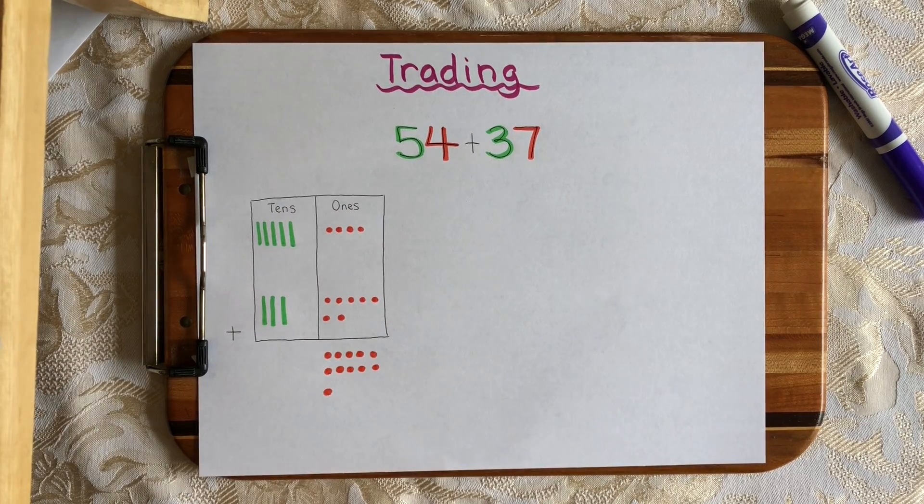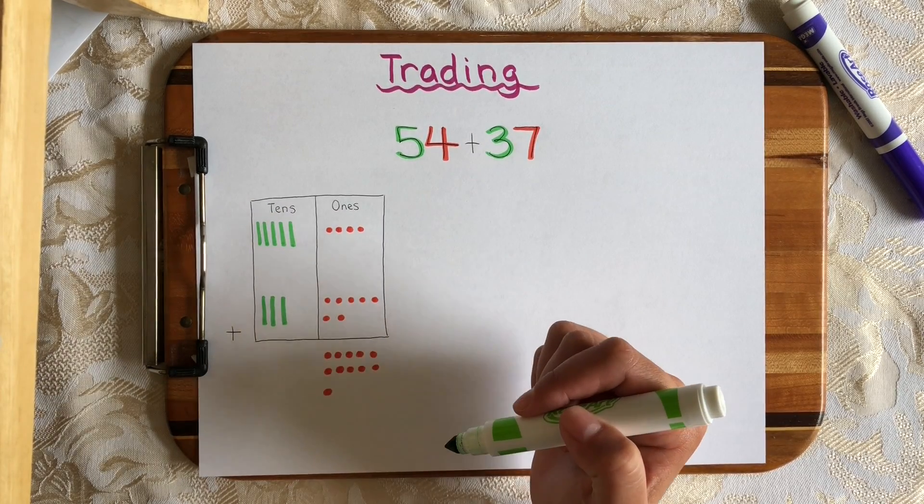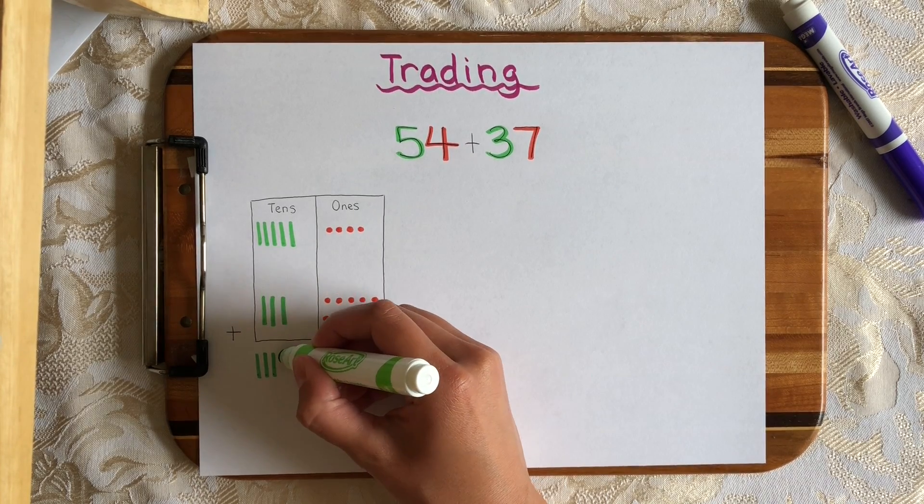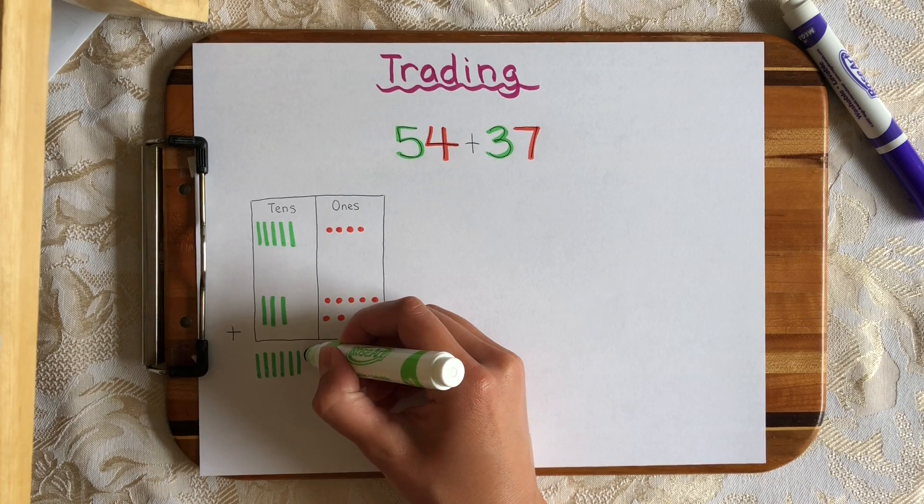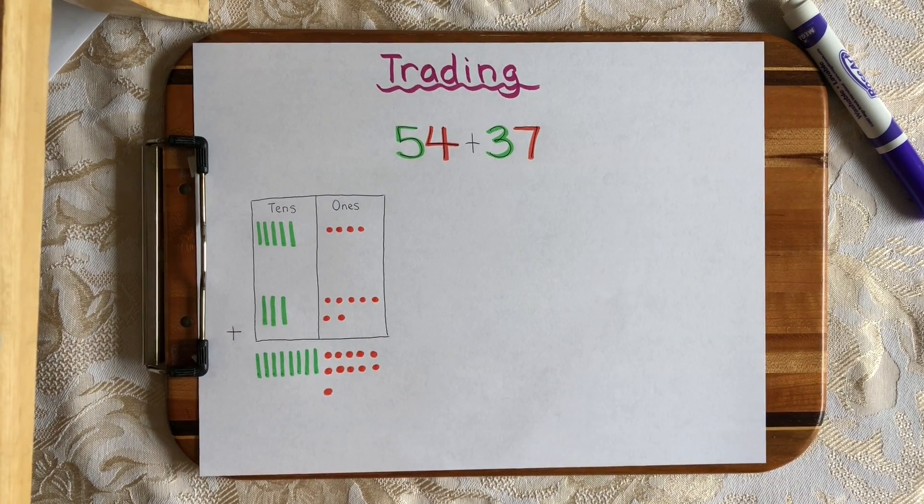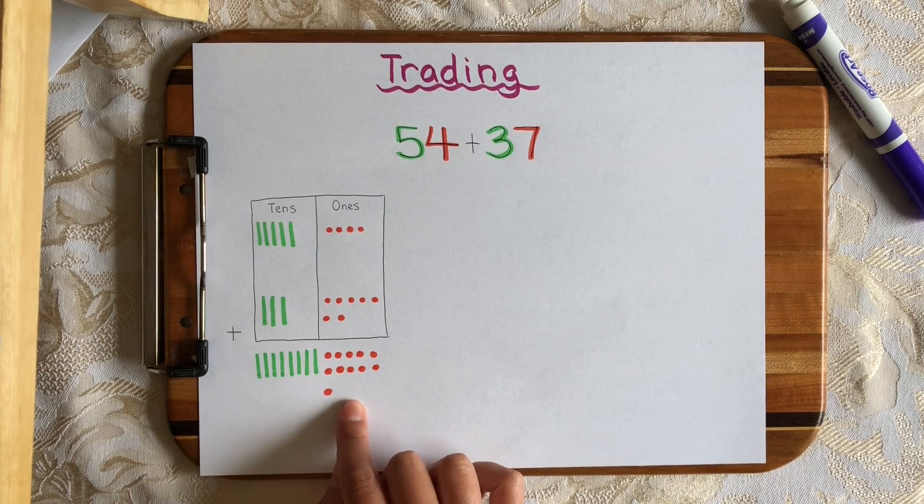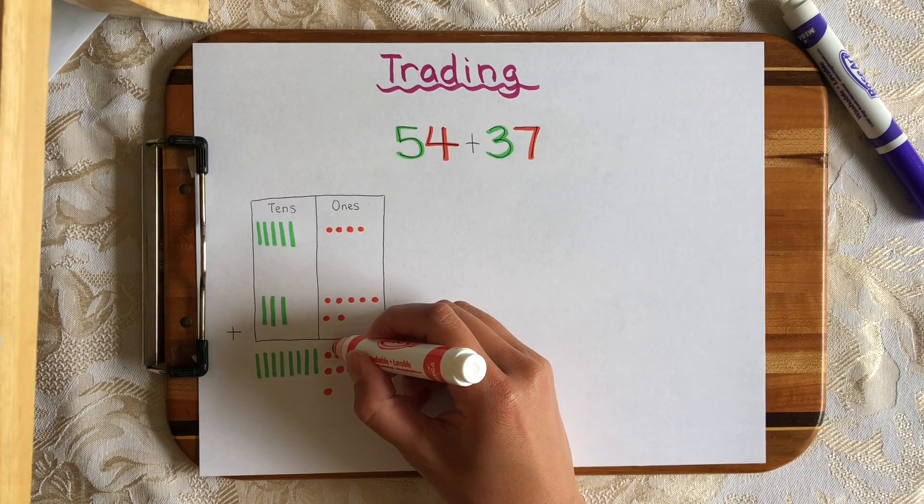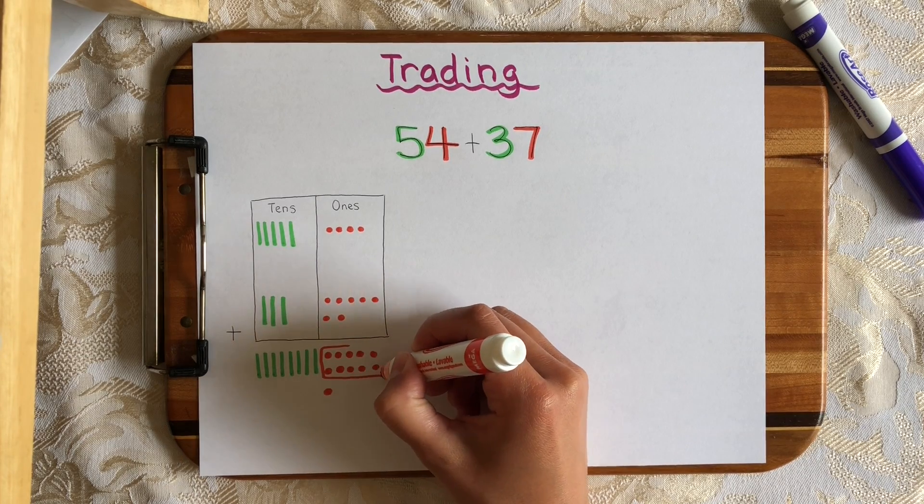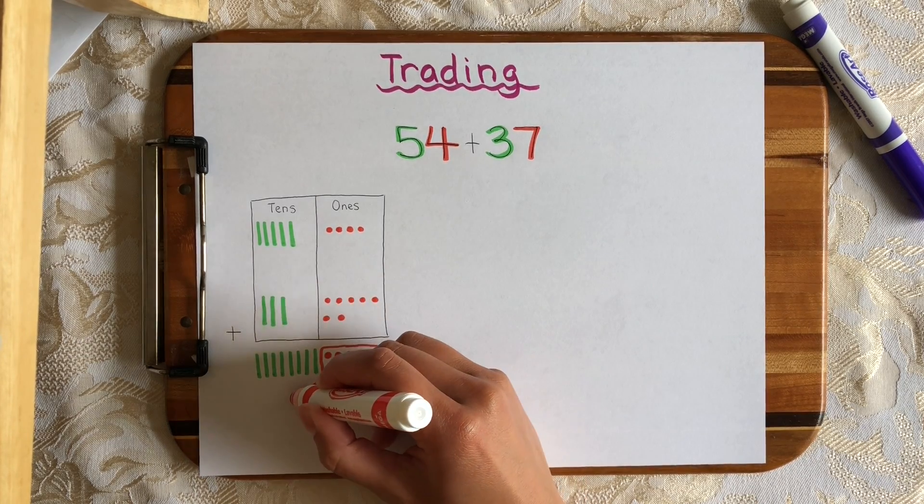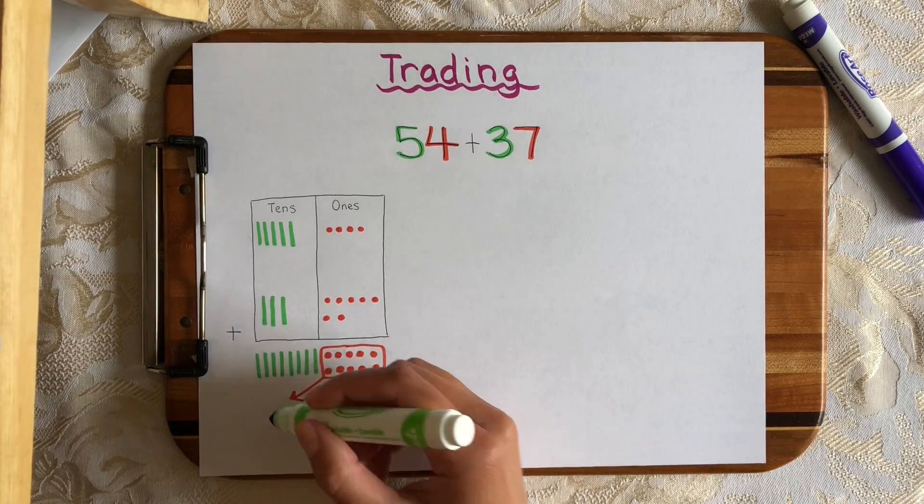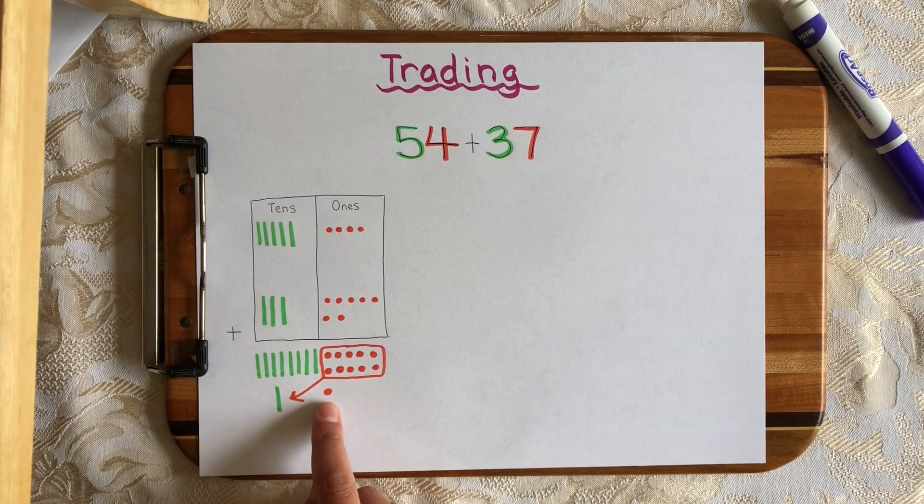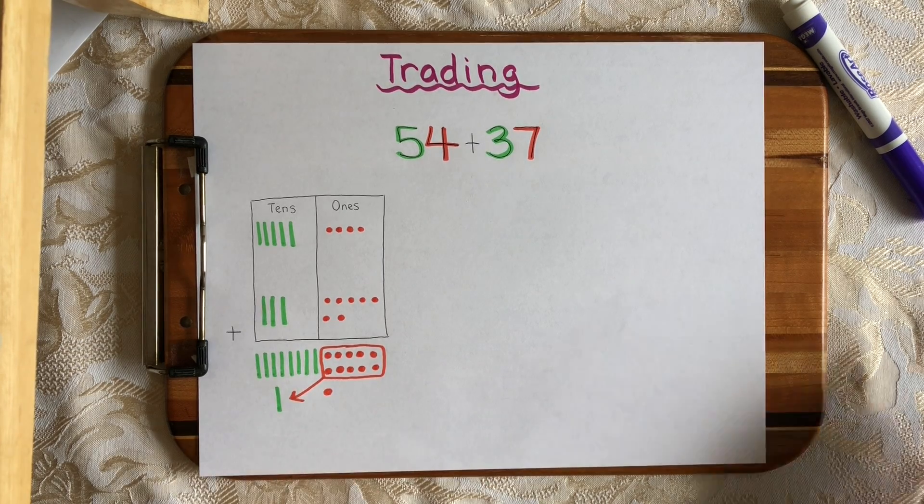There's the sum of my ones from both my addends. Now let's do the same for the tens. 5 tens plus 3 tens. 5 plus 3 is 8 tens. So 1, 2, 3, 4, 5, 6, 7, 8. And now this is my sum. I have 8 tens and 11 ones. But since I have more than 10 ones, I can actually trade this group of 10 ones for 1 10 instead. And now I have 9 tens and 1 1, which is 91.